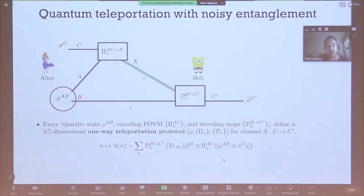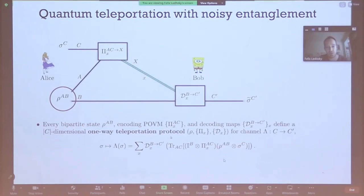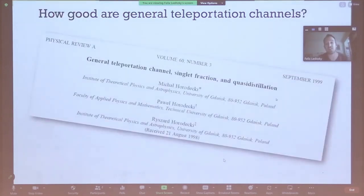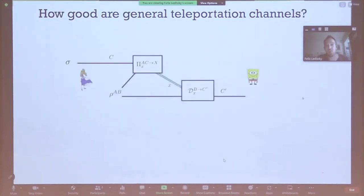We can view this as a channel from C to C prime, because all that teleportation tries to achieve is to send a quantum state through a channel. When the entanglement is noisy, this channel will in general be noisy as well. We can write down this teleportation channel, and then ask how good the protocol is. This was first addressed in a famous paper by the Horodeckis in the late 90s, where they looked at two different ways of assessing the quality of this teleportation channel and trying to relate the two.